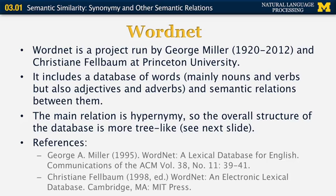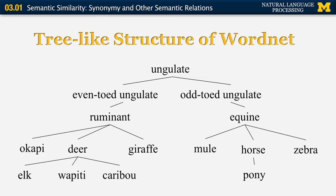In this example I'll show you a small subtree of WordNet that matches the relationship between different animals. The word 'ungulate' is shown on top. Ungulates are divided into even-toed and odd-toed ungulates; odd-toed ungulates include equines, which are mostly horses but also mules and zebras, and even a more specific example like pony. On the left-hand side, okapis, deer, and giraffes are all examples of ruminants, and elk, wapiti, and caribou are all examples of deer. So to remind you: 'deer' is a hypernym for 'caribou,' and 'caribou' is a hyponym for 'deer.'